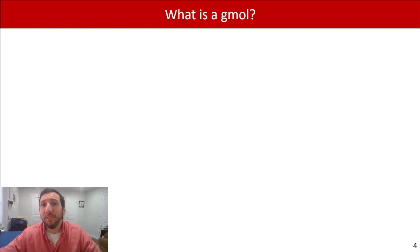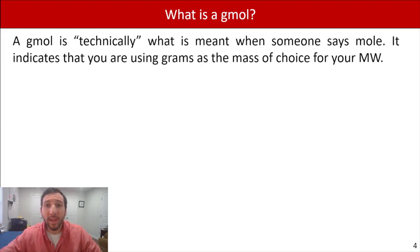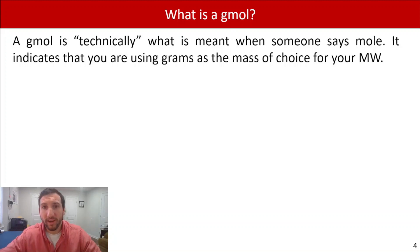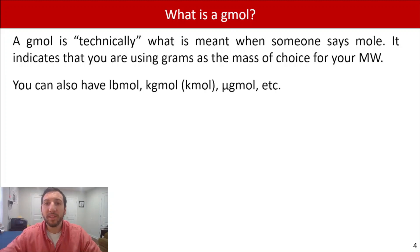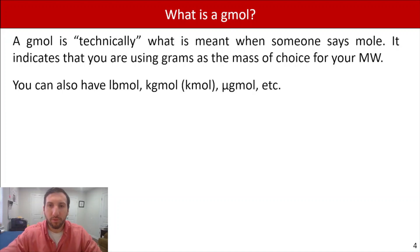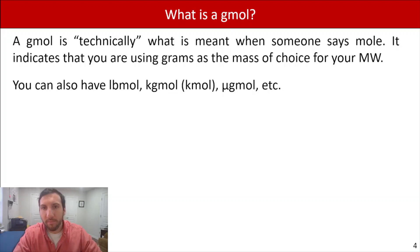There are actually a few slight differences here. Technically, a gram mole is what we mean when we say a mole — it indicates that we are using grams as our mass of choice for molecular weight. However, there are other types of moles. You can also have a pound mole, a kilogram mole, or a microgram mole. The preceding term — pound, gram, kilogram — indicates what mass you are referring to.